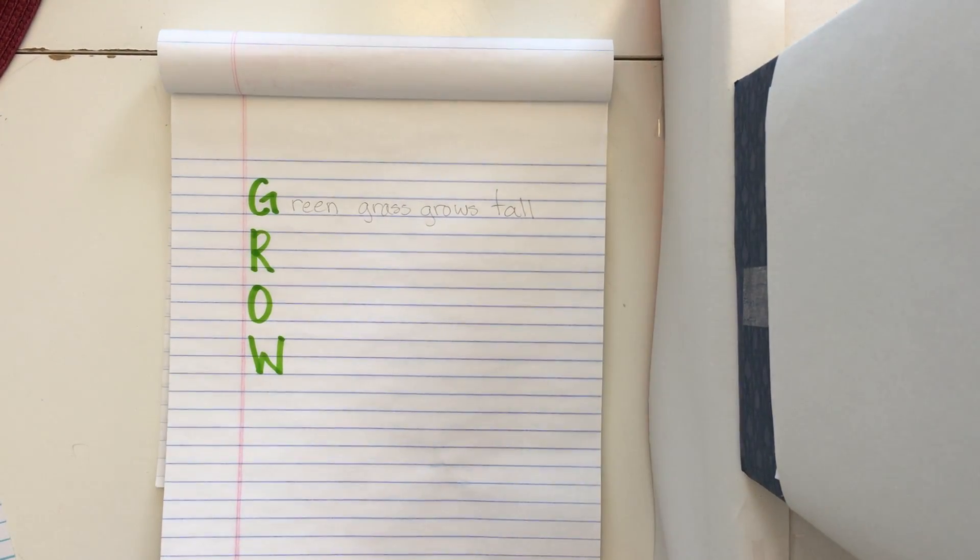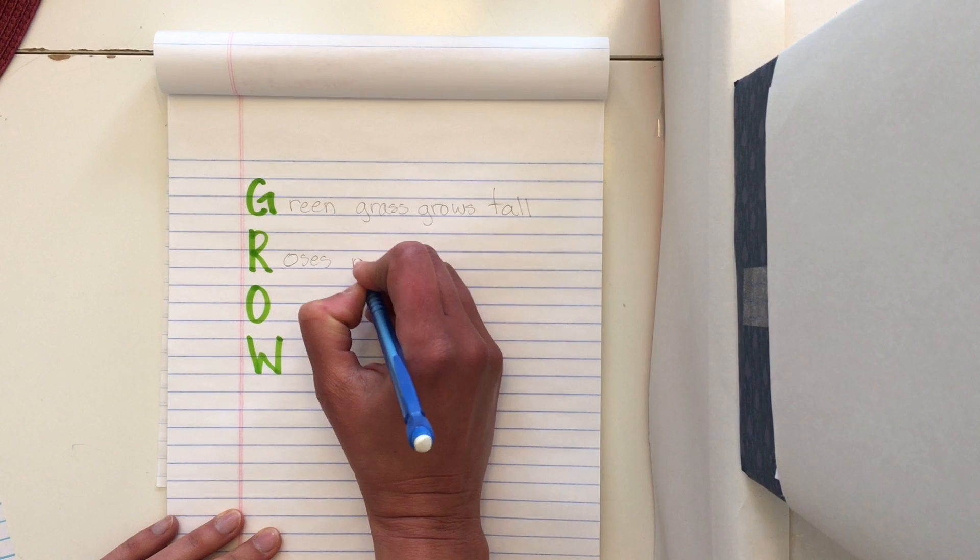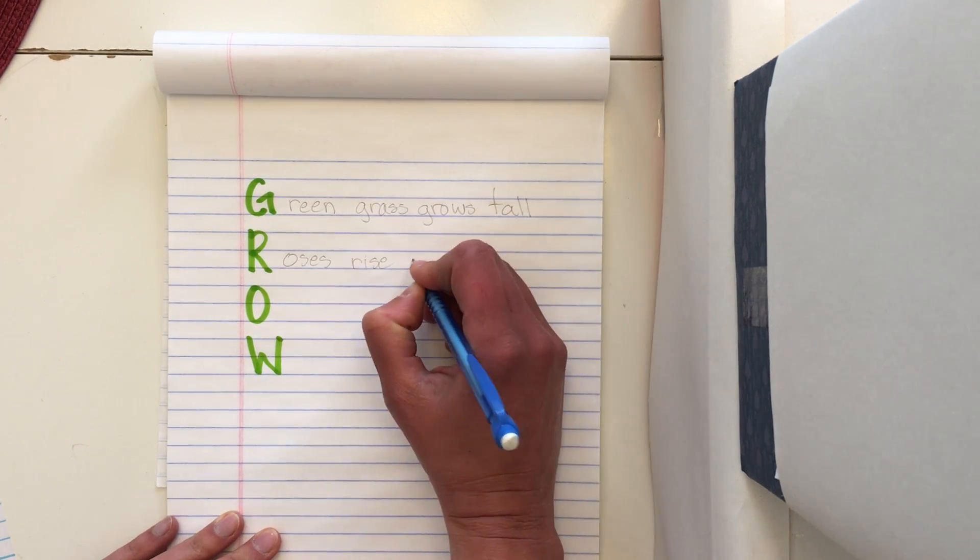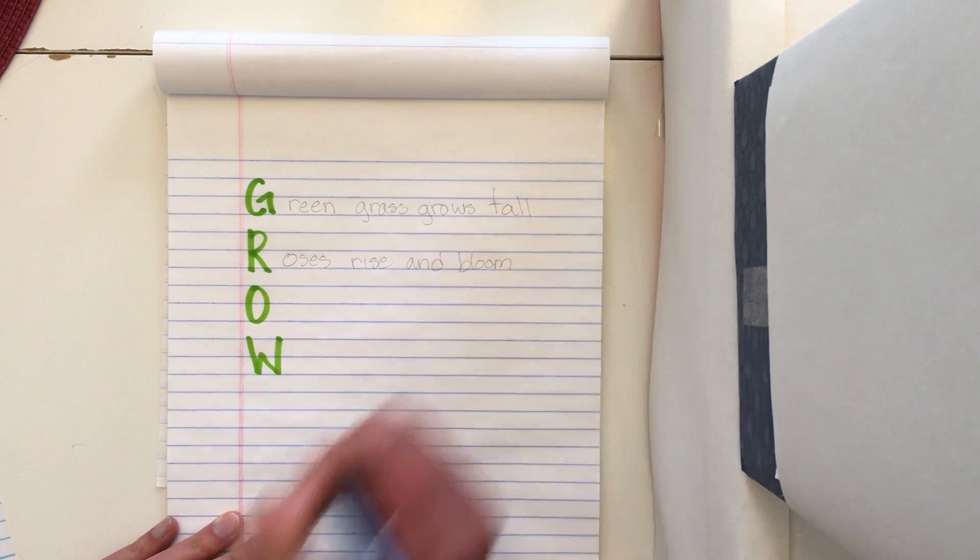What about my R? What are some things that have to do with R? Well, I talked about flowers. What type of flowers? Roses, rainbows. All right. Why don't we do that? Roses, rise, and bloom. So that's what flowers do.